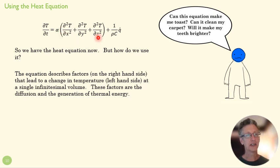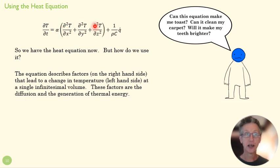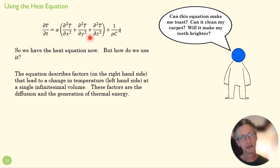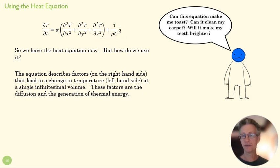These factors here: this is the diffusion of thermal energy — the flux that moves through it because of temperature differences. This is the generation of thermal energy within that volume itself. So this says temperature will go up if the flux coming in is bigger than the flux going out, or if there's a lot of generated heat in this volume.